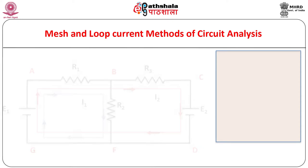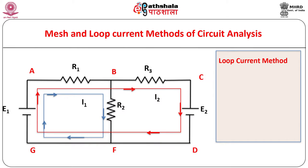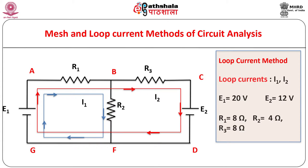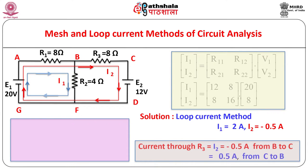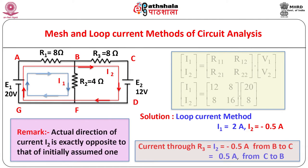For analyzing the same circuit by loop current method, assume loop currents I1 and I2 through the loops A, B, F, G, A and A, B, C, D, F, G, A respectively. These currents can be determined by standard method. The results are as shown. Note that the actual direction of current I2 is exactly opposite to that initially assumed.